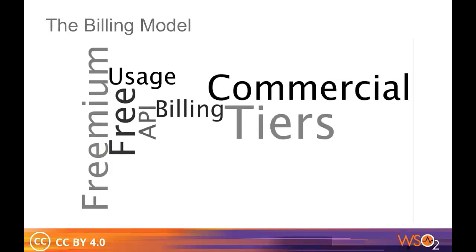Each API is exposed over different usage levels called tiers. Tiers are given different access restrictions. Tiers can be free or commercial. A single API could have a mix of tiers where the API can be consumed without charges for evaluation, and then consumers can later upgrade to a billable tier when necessary.